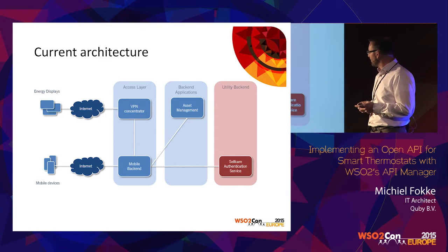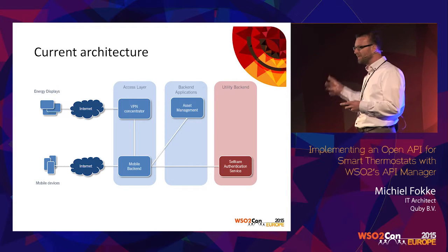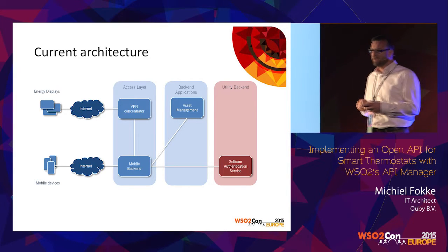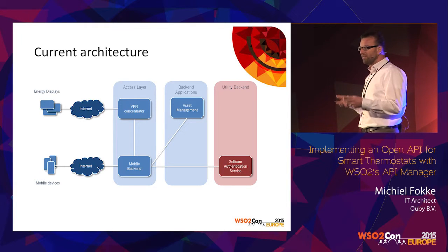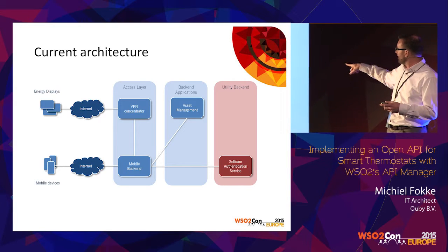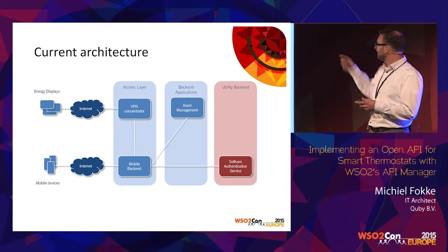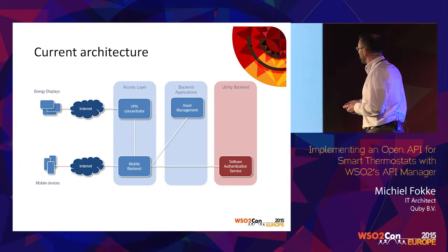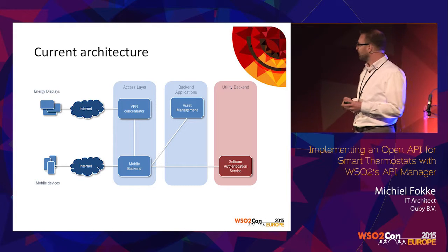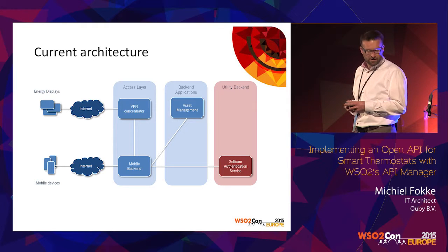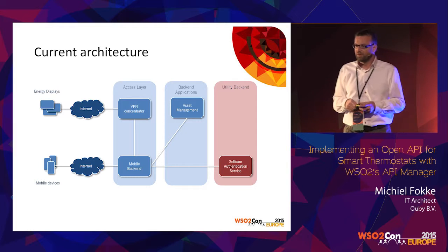The mobile devices connect over a secure web connection to a component we call the mobile backend — a reverse proxy that integrates with our asset management system to figure out which device belongs to the user logging in from a mobile or tablet application. The mobile backend then directs traffic directly over the VPN concentrators to the energy display, so you have a live connection to the display in your home. You don't need to create an account at Quby; you can use credentials from the self-care system from Eneco, the utility where you bought the device.